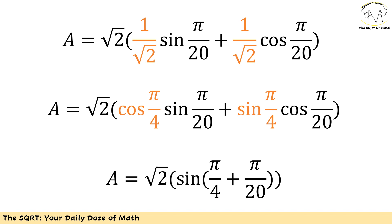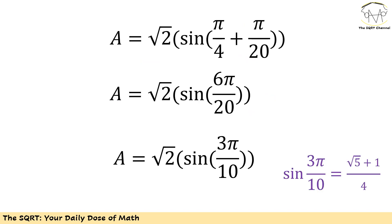I replaced what I had for 1 over √2 with sine and cosine, then used an identity to simplify everything. Now I need to do a bit more simplification. Focusing on π/4 plus π/20: simplifying gives 5π/20 + π/20, which is 6π/20, which simplifies to 3π/10. So I end up with √2 times sine of 3π over 10.